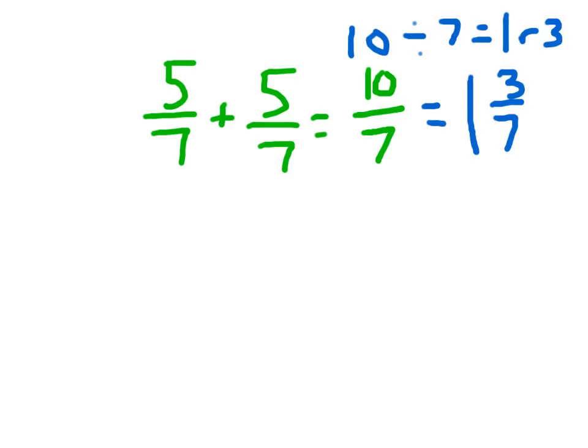Yep, that three, if we were able to divide it, we'd divide it into seven parts. So five-sevenths plus five-sevenths equals one and three-sevenths, where it is that I showed my work there.